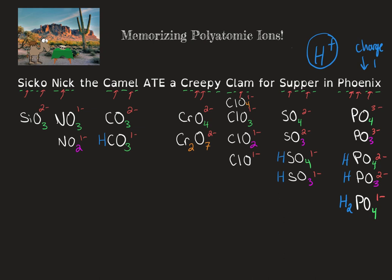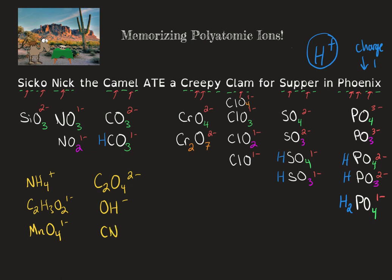There may be other polyatomic ions not included in this list, such as the positively charged ammonium. We may also look at acetate, C₂H₃O₂, which has a 1− charge. We also have permanganate, MnO₄, 1−. We can also look at oxalate, C₂O₄, 2−. We have hydroxide. We have cyanide. There are others as well, such as bromate and iodate, which we will not cover in this course.